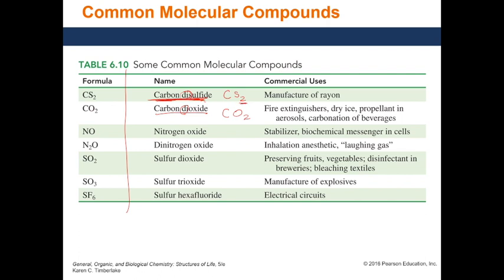When going from formula to name, your subscript becomes your prefix. For example, 'nitrogen monoxide' — NO — has one nitrogen and one oxygen. Sometimes 'mono' is omitted, but my suggestion is to stick to the rule and use 'monoxide'. Both are acceptable.